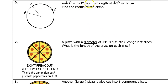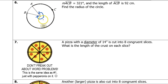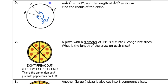We're given the arc measure this time. We're given that this whole central angle, which is the same as the arc measure, is 321 degrees — that's theta. We're given that the arc length is 92. So this whole length is 92 centimeters.